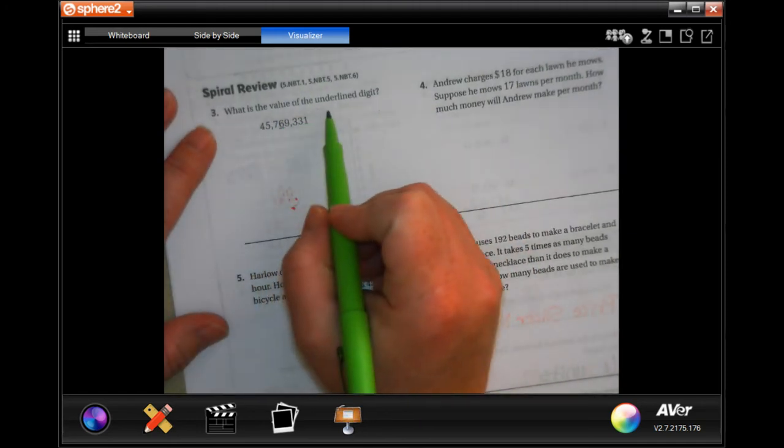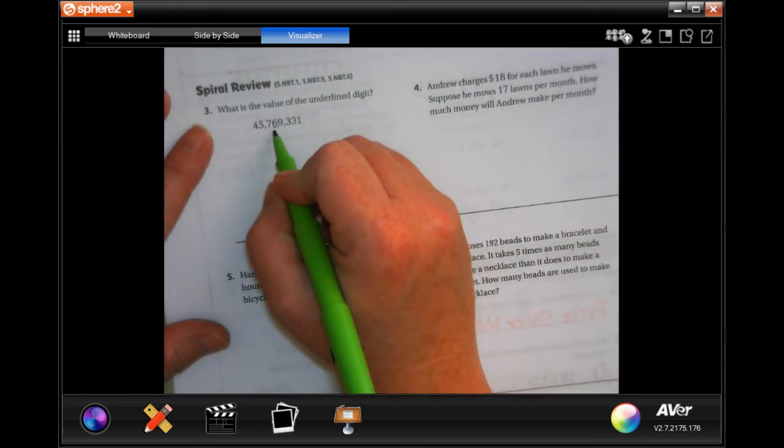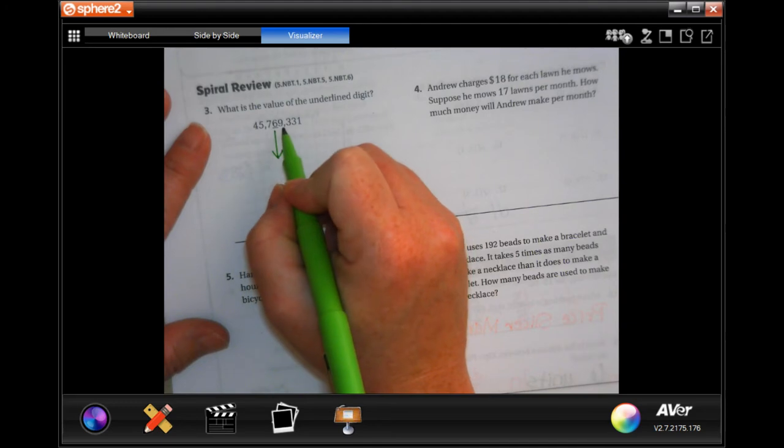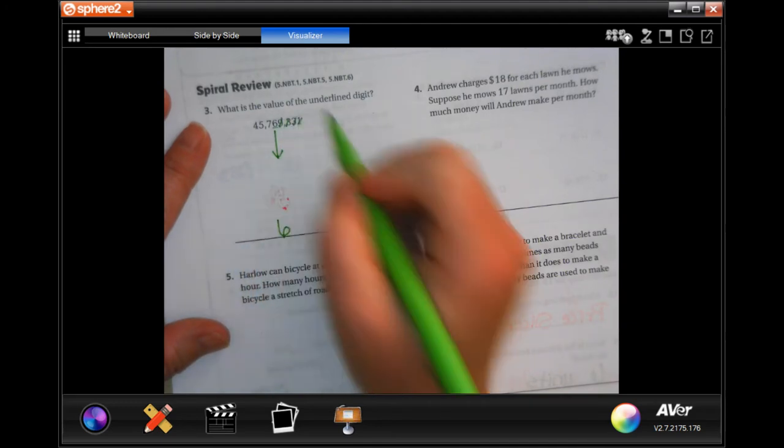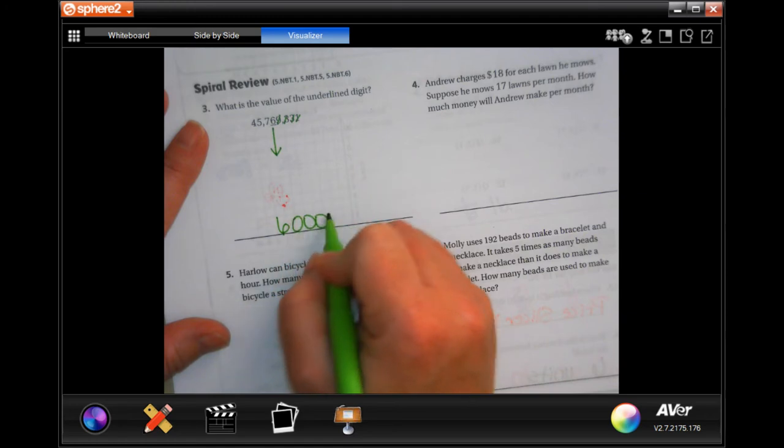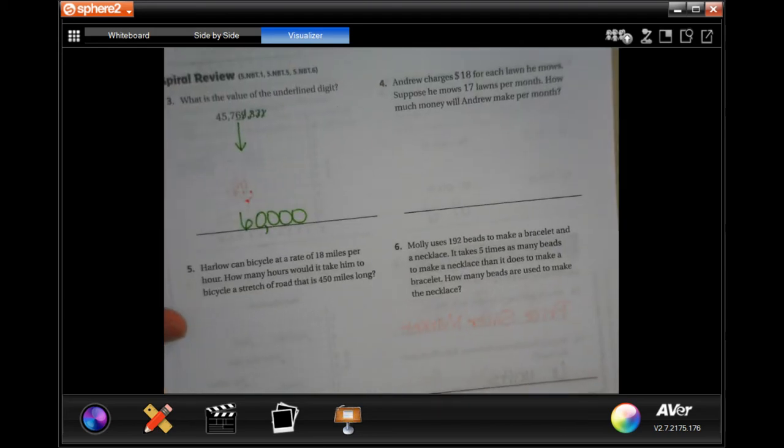We are going to go down and do this spiral review. What is the value of the underlined digit? So we love these because all you have to do is drop that underlined digit and everything afterwards. So one, two, three, four, five. One, two, three, four becomes a zero. $60,000. Done.